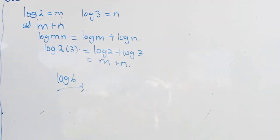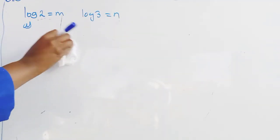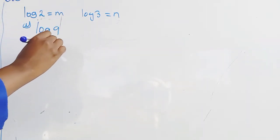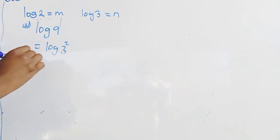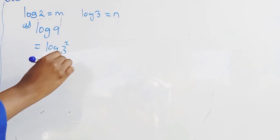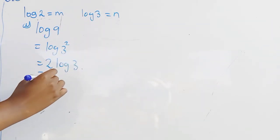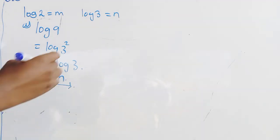The next part of the question asks us to express logarithm of 9 in terms of n. Logarithm of 9 is the same as logarithm of 3 to the power 2. When we have a power, we bring it down, so it becomes 2 logarithm of 3. Since log 3 is n, our final solution is 2 times n, which is 2n.